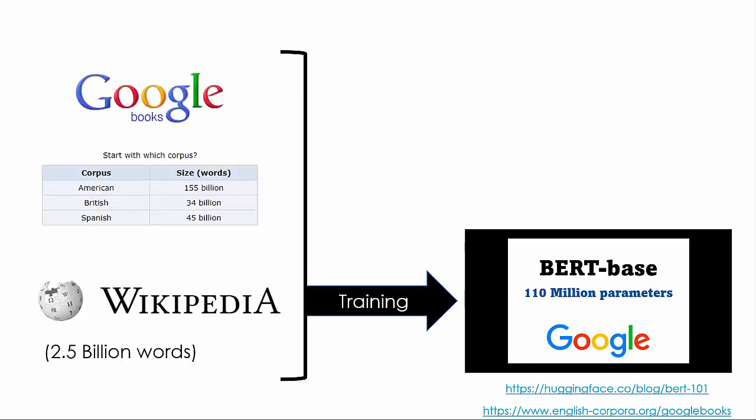Here is an example of a model. Birdbase is a generative model created by Google. This model has 110 million parameters. It was trained by Google research engineers with data from Wikipedia and Google Books. For more details on this model, check out the blog link that I have provided.